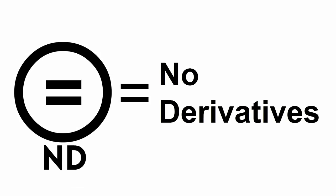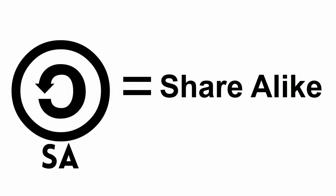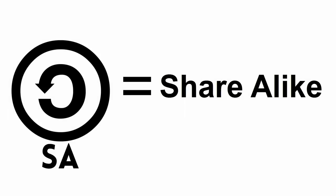An equals symbol means no derivatives — you can use the work, but you cannot change or modify it. The share alike symbol has a backward C with an arrow on the end, indicating you must share the new work you create with the same Creative Commons license.